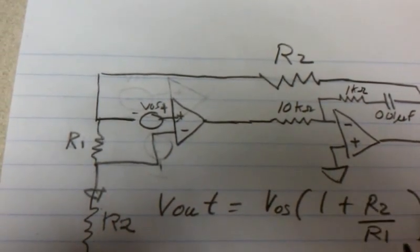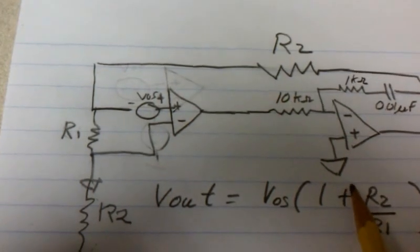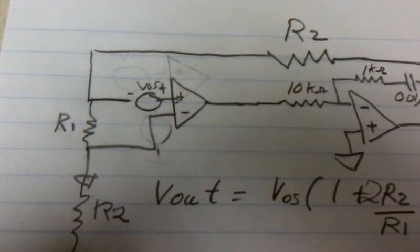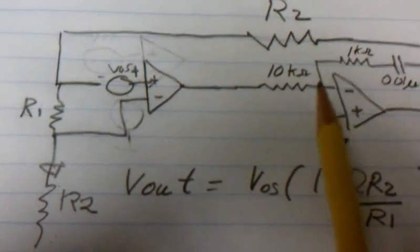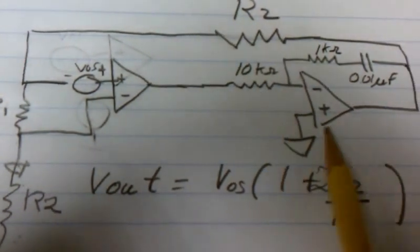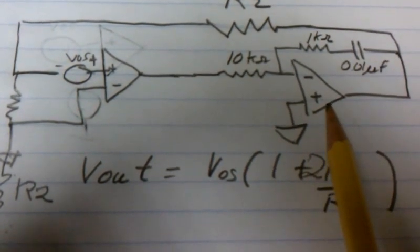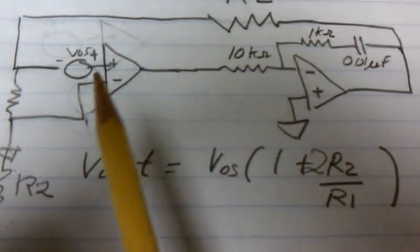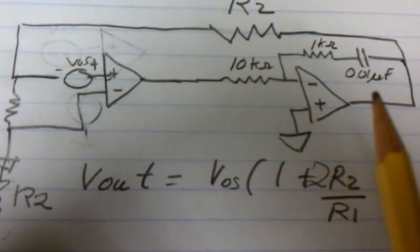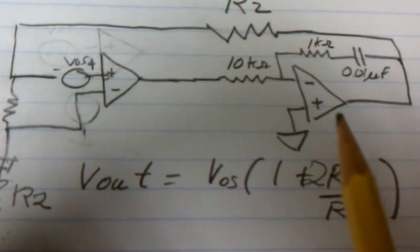And it would change this equation to 2R2. And so this putting in an op amp inside the feedback loop is a classic way to improve circuit performance.